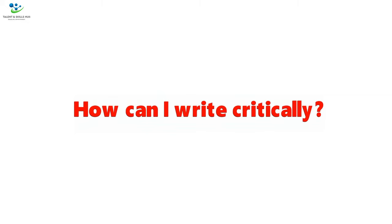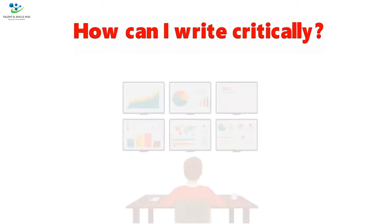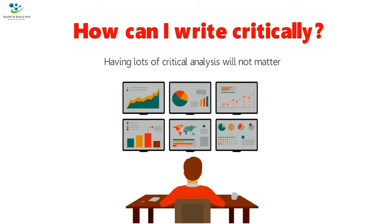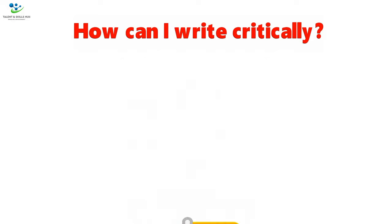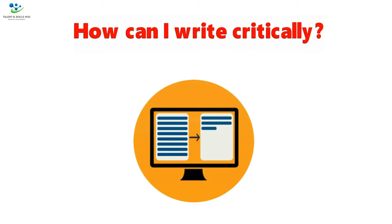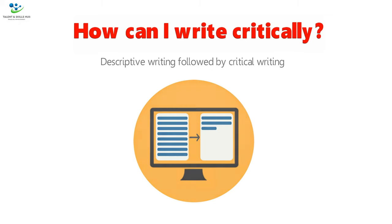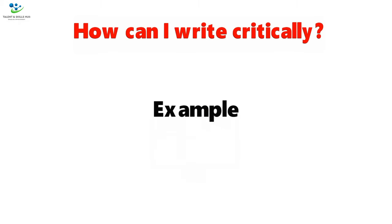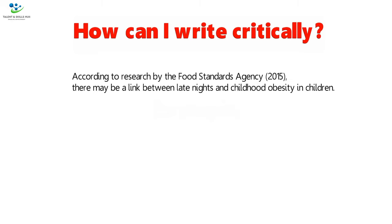How can I write critically? It is important to remember that having lots of critical analysis will not matter if your ideas are not clearly structured. To maintain structure in your critical writing, it is important to use paragraphs correctly. Using a good paragraph structure will enable the reader to clearly see descriptive writing followed by critical writing. For example, have a look at the following paragraph. According to research by the Food Standards Agency, there may be a link between late nights and childhood obesity in children.